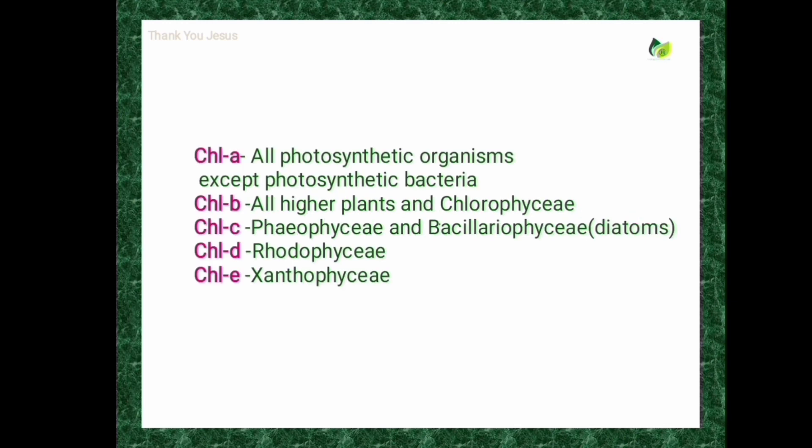Chlorophyll A is present in all photosynthetic organisms except photosynthetic bacteria. Chlorophyll B is present in all higher plants and Chlorophyceae. Chlorophyll C is present in Phaeophyceae and Bacillariophyceae. Chlorophyll D is present in Rhodophyceae. Chlorophyll E is present in Xanthophyceae.